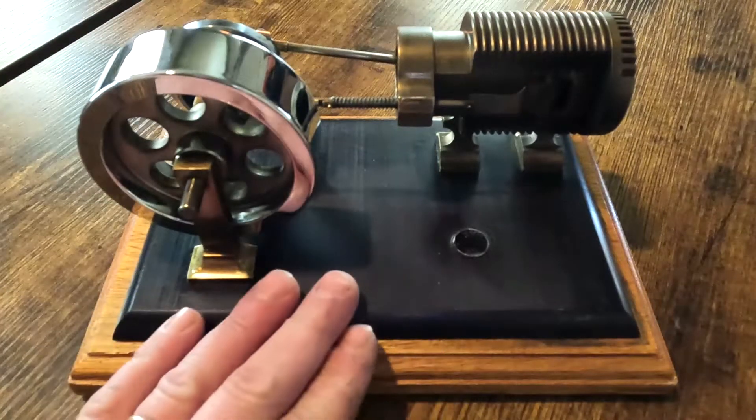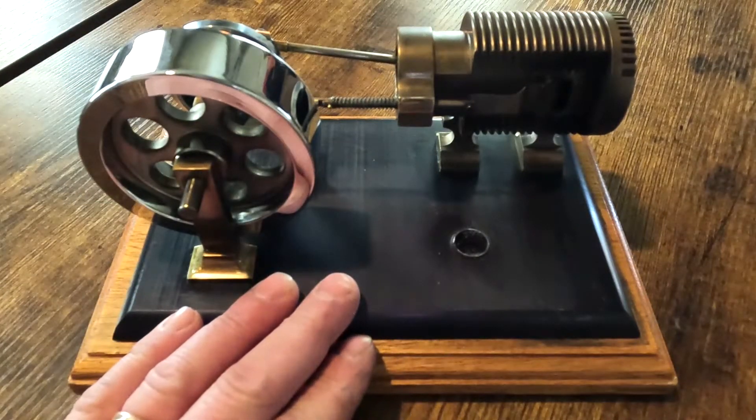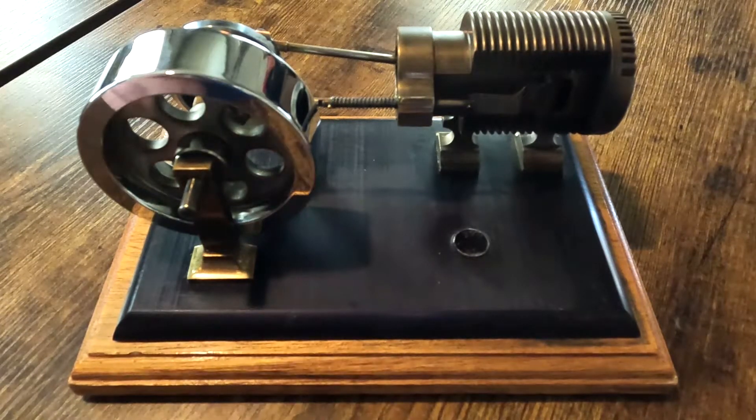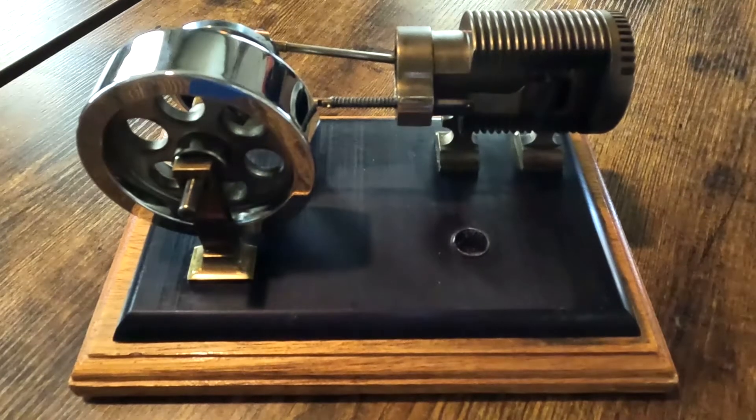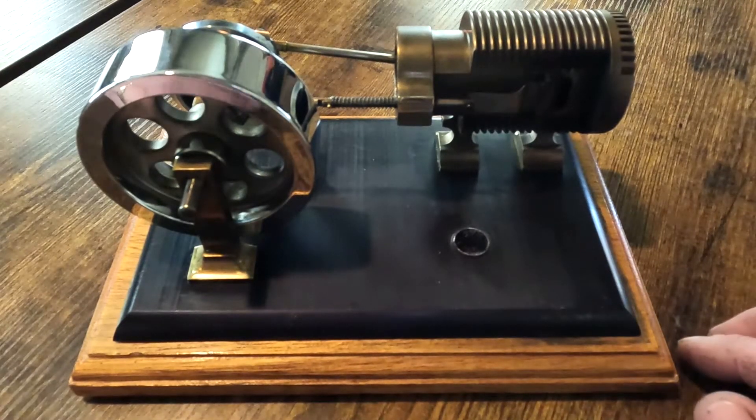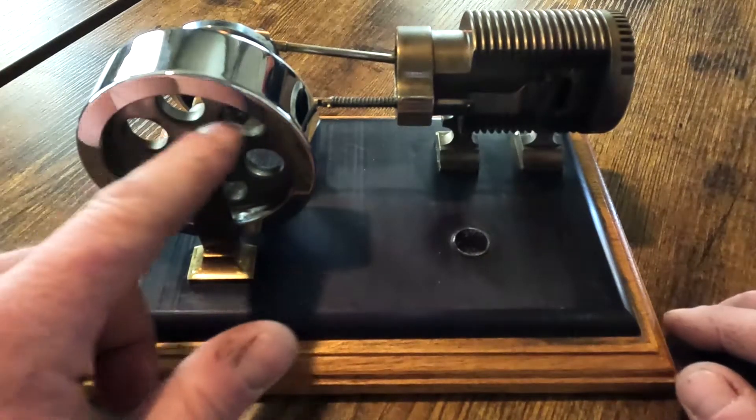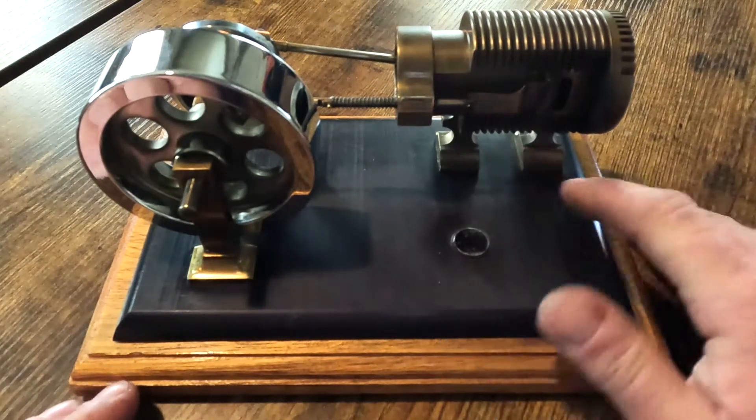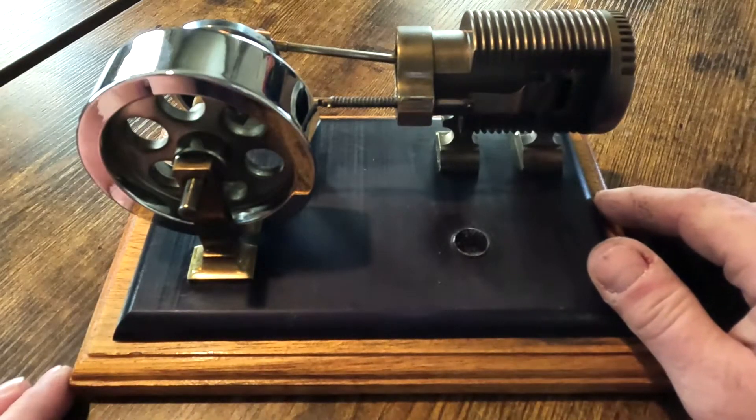This is a number three flame licker or vacuum engine. They're a very nicely built model. This is the older design. They've changed the design - the flywheel has changed a little bit and the mount on the cylinder has changed.